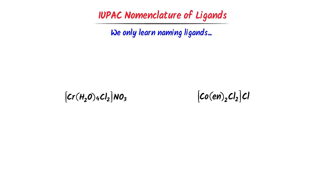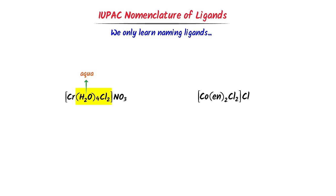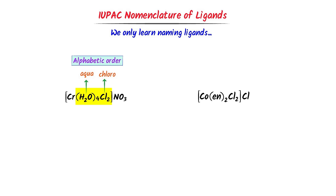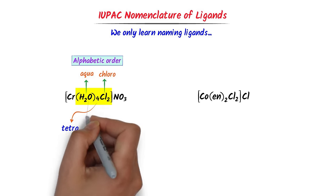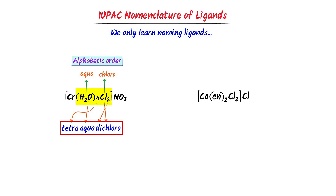Now consider these coordination compounds. In case of this coordination compound, there are two ligands: one is chlorine and the other is water H2O. We know that water is a neutral ligand and its name is 'aqua', while chlorine is an ionic ligand and we write 'chloro' for it. If there are two or more ligands, we write them in alphabetical order. Since A comes before C, I write 'aqua' and then 'chloro'. There are four molecules of water, so I write 'tetraaqua', and two ions of chlorine, so I write 'dichloro'. Remember that there is no space while writing names of ligands. Thus I get 'tetraaquadichloro'.